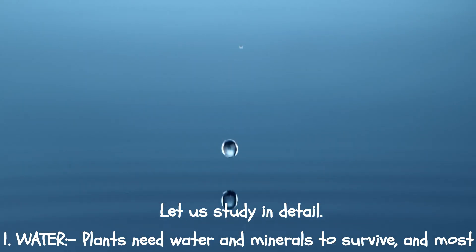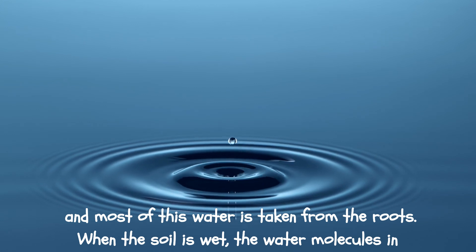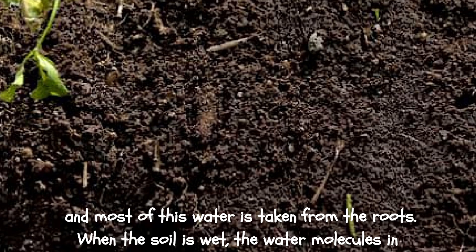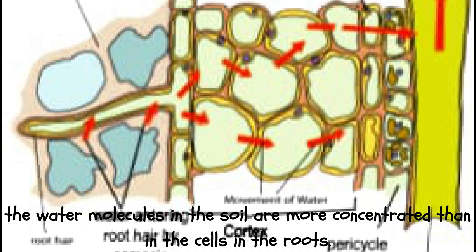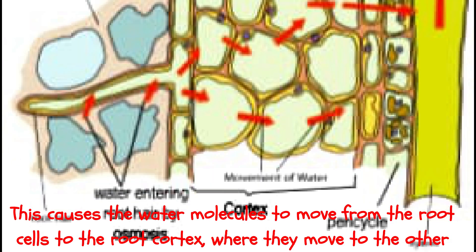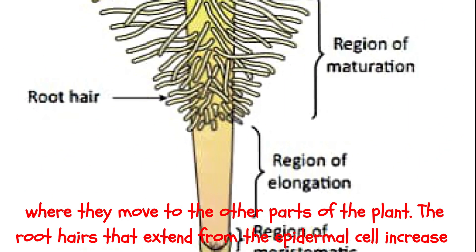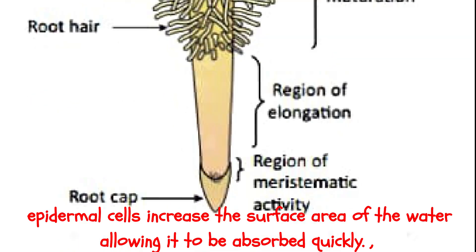1. Water. Plants need water and minerals to survive, and most of this water is taken from the roots. When the soil is wet, the water molecules in the soil are more concentrated than in the cells in the roots. This causes the water molecules to move from the root cells to the root cortex, where they move to the other parts of the plant. The root hairs that extend from the epidermal cell increase the surface area of the water, allowing it to be absorbed quickly.